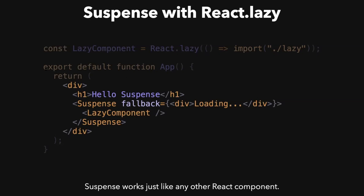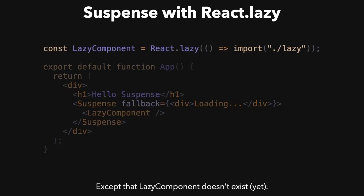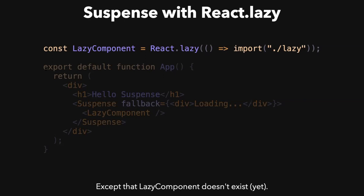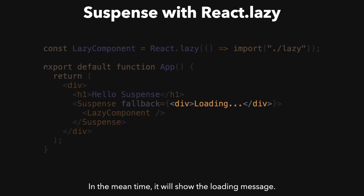The Suspense component itself is just like any other React component, except that this lazy component isn't a component yet. Under the hood, it's really just a promise that we will get a component in the future, which is what drives this whole thing. While that promise is still resolving, it's going to show this fallback value — in this case, just 'loading' — but you can stick any JSX in there you want, so you can render whatever loading spinner you need. When the lazy component is done loading, it will take away the fallback and display those children instead.